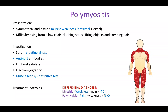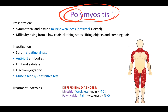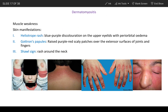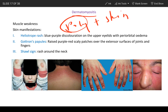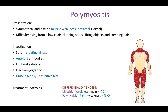Let's talk about polymyositis and dermatomyositis. Polymyositis means poly — multiple, myo — muscles, and itis — inflammation, so multiple muscles are inflamed. Dermatomyositis is polymyositis plus skin manifestations — the same muscle weakness plus additional skin findings. Both of these conditions are autoimmune and will have certain associated antibodies.